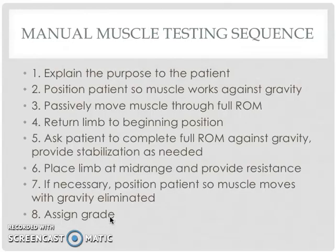The basic sequence for grading is: we explain to the patient what we are doing and why, we position the patient so the muscle can move against gravity, and in the example of shoulder abduction, the patient is sitting or standing. We take the limb and move it through the full motion to make sure there is no structural issue preventing the joint from moving through that full range. We return the limb to the beginning position and ask the patient to perform the movement.